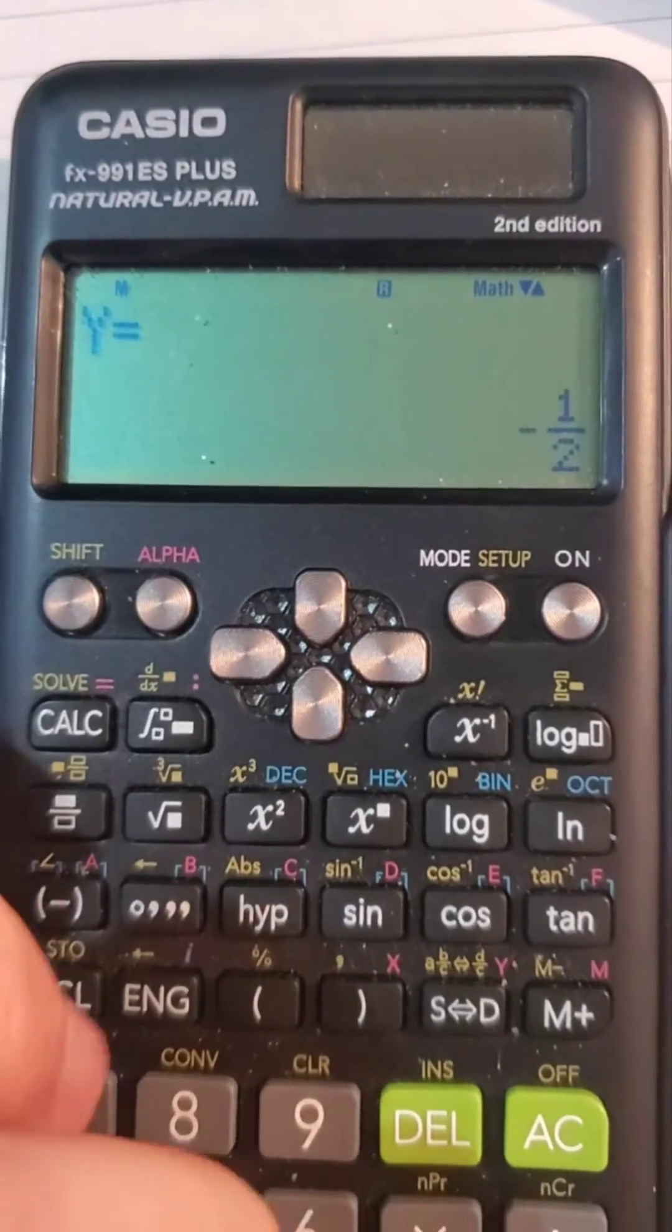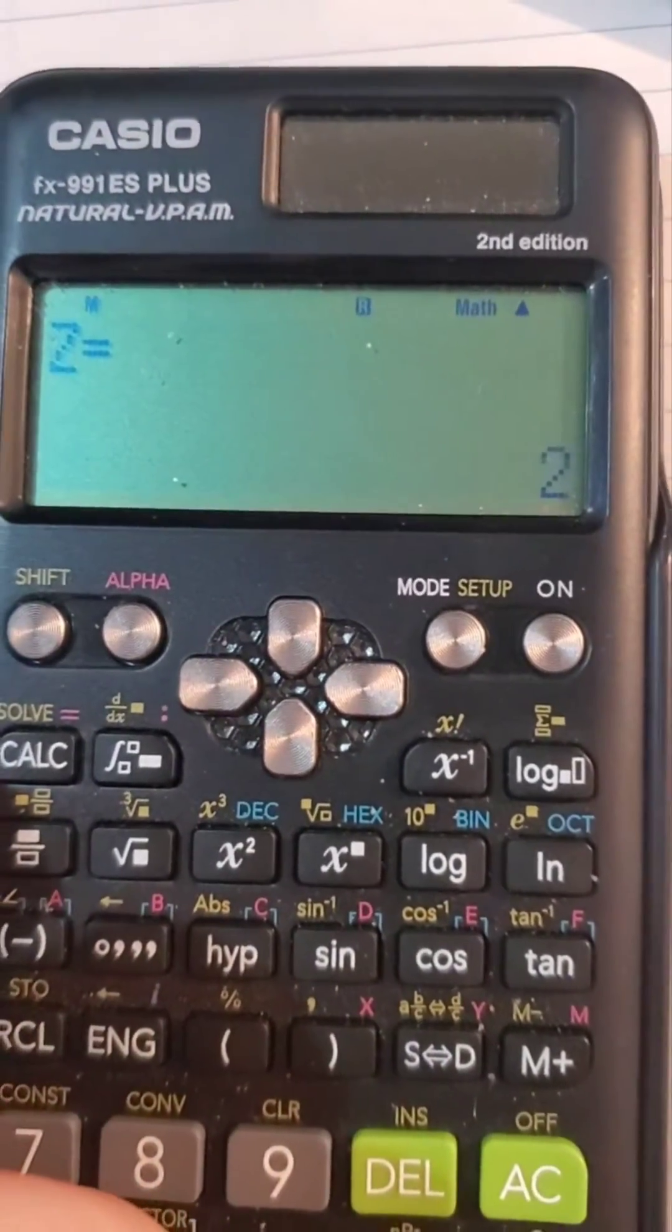X has to be a fourth, Y has to be negative a half, and Z has to be two.